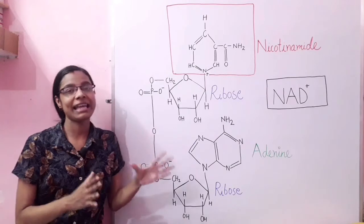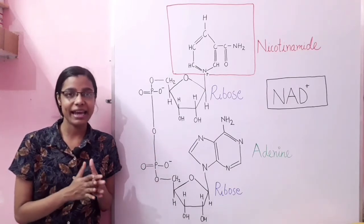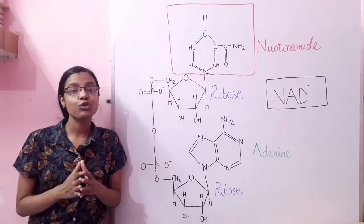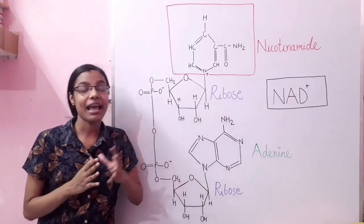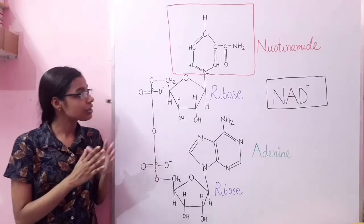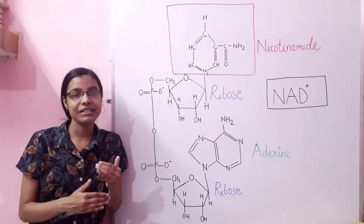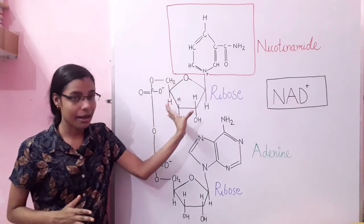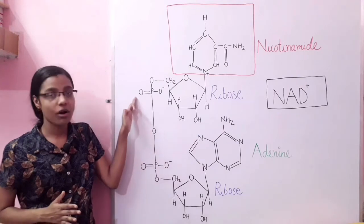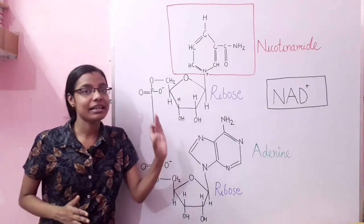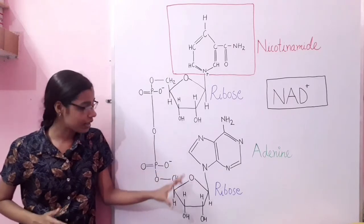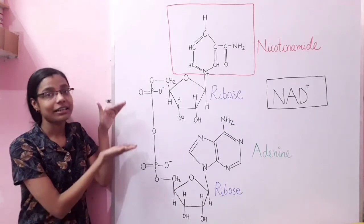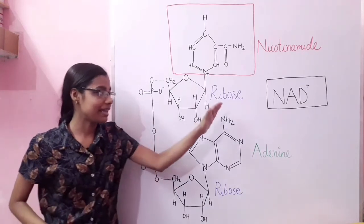This is the structure of NAD, nicotinamide adenine dinucleotide, which consists of a nicotinamide ring — the most reactive part of NAD as well as NADP — which participates in oxidation-reduction reactions. This nicotinamide ring is attached to a ribose sugar, which is attached to a phosphate group. NAD also consists of adenine attached to a ribose sugar, which is attached to a phosphate group, and both subunits are attached to each other to form NAD.